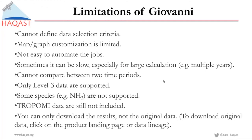So if you want to do a calculation for multiple years, Giovanni could still save you a lot of time compared to downloading and processing data manually. Also in Giovanni, while we can compare across different variables, you cannot compare between two time periods. Currently, only Level 3 data are supported — these are data on a regular latitude-longitude grid. Some species such as ammonia are still not supported, and the new generation TROPOMI data are currently not included in Giovanni. Also, while you can download results from Giovanni, it does not allow you to download the original satellite data — you would need to go to the product landing page or data lineage to find the link to the original data.